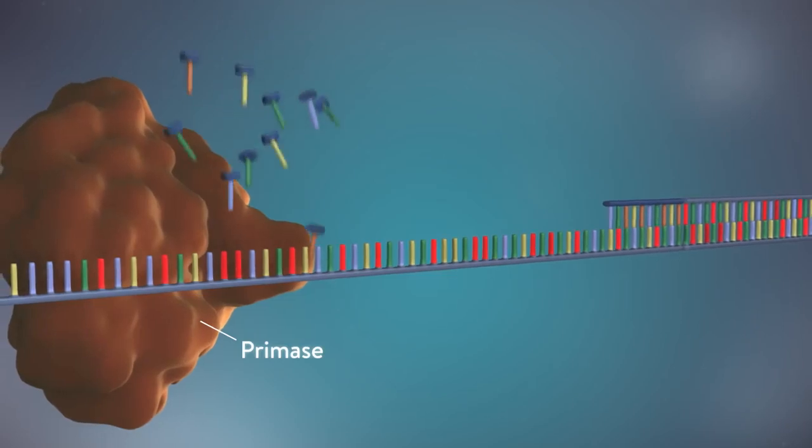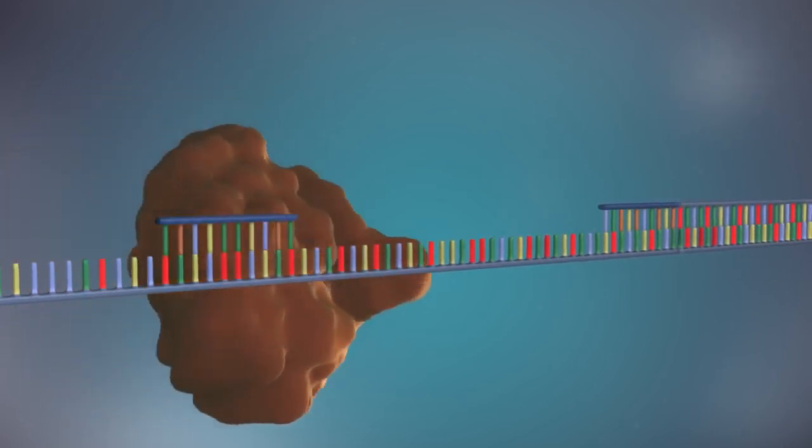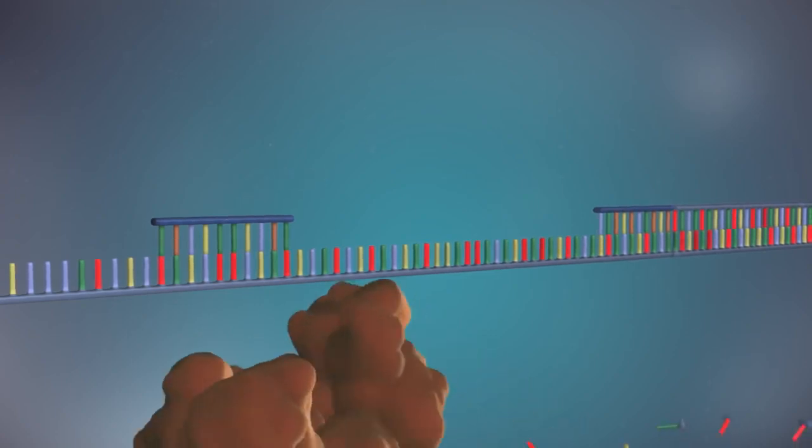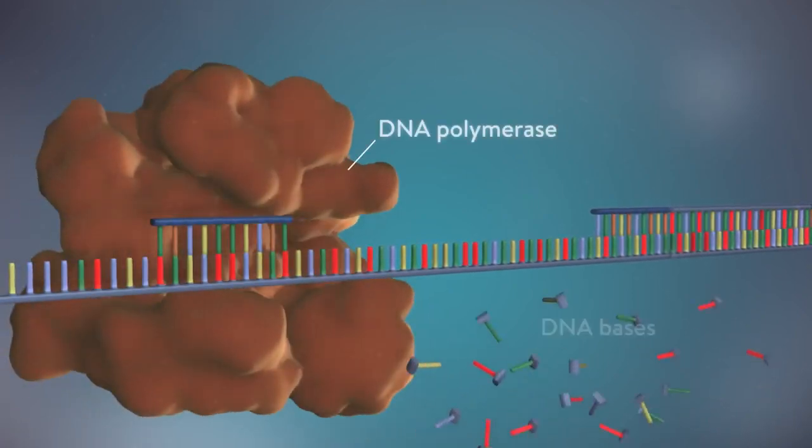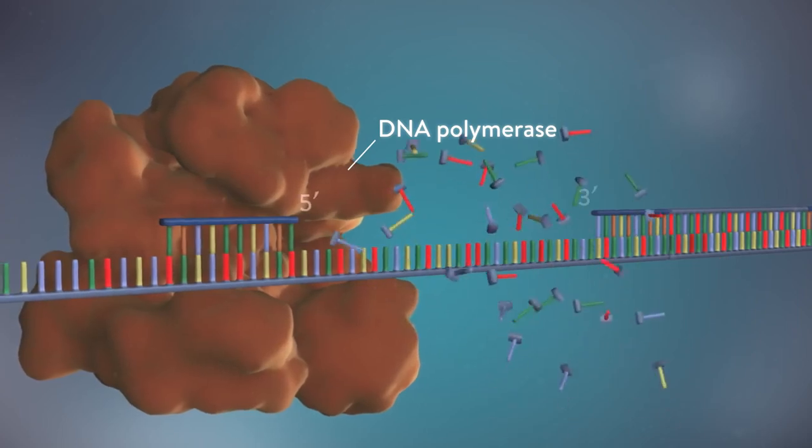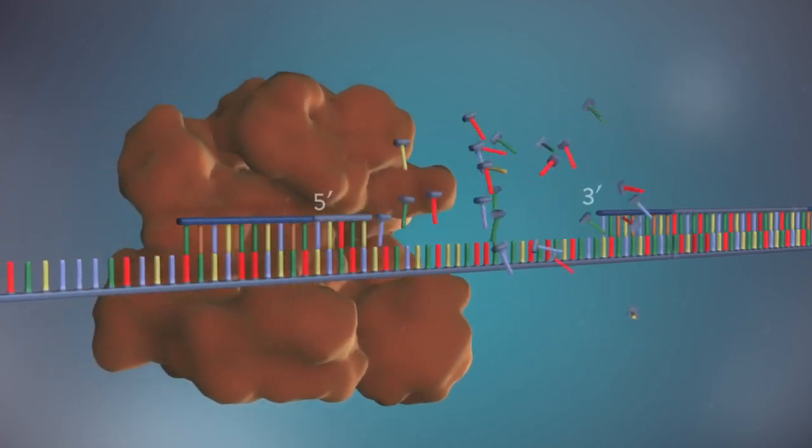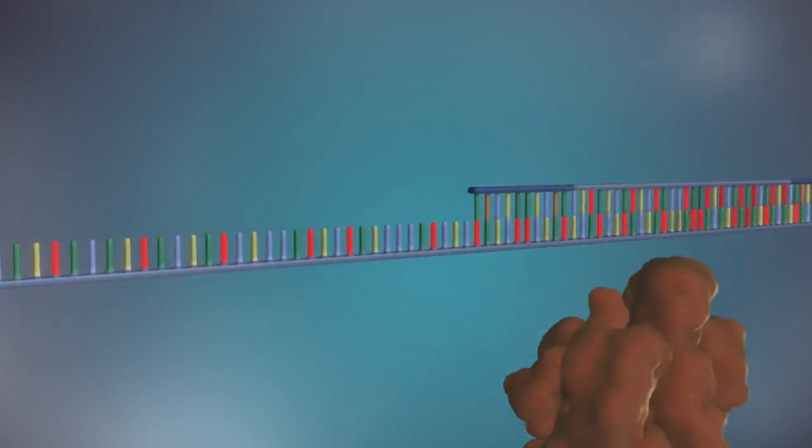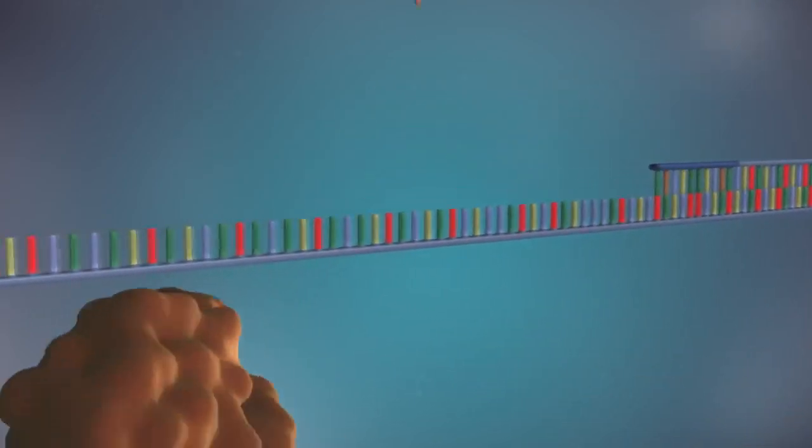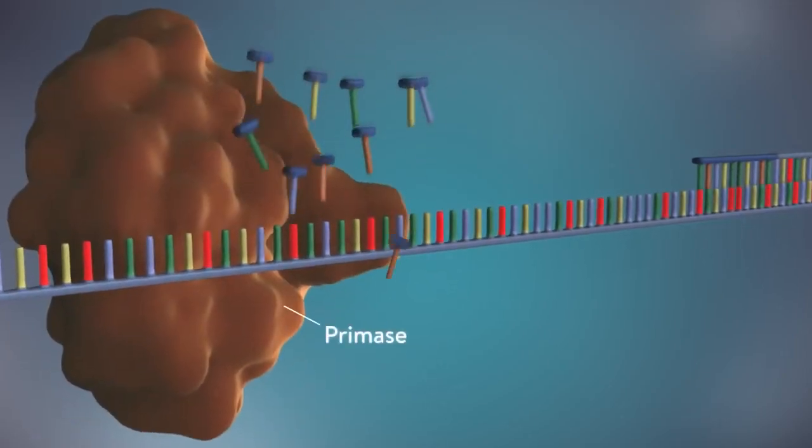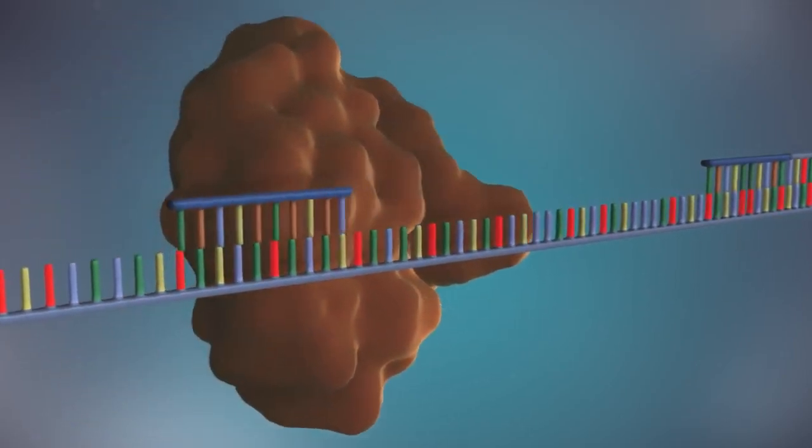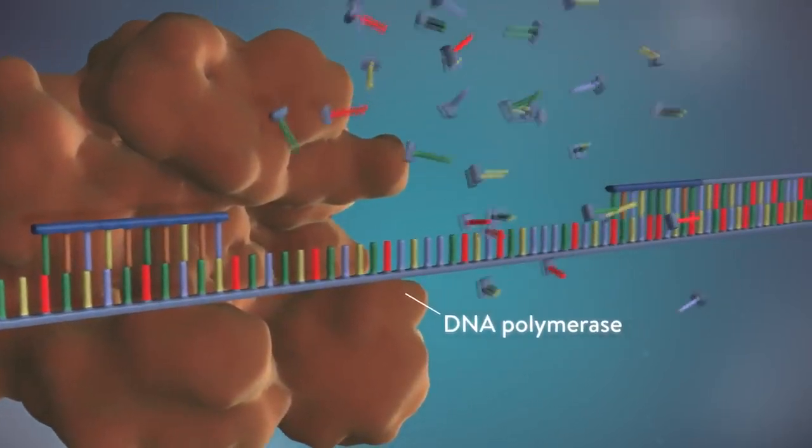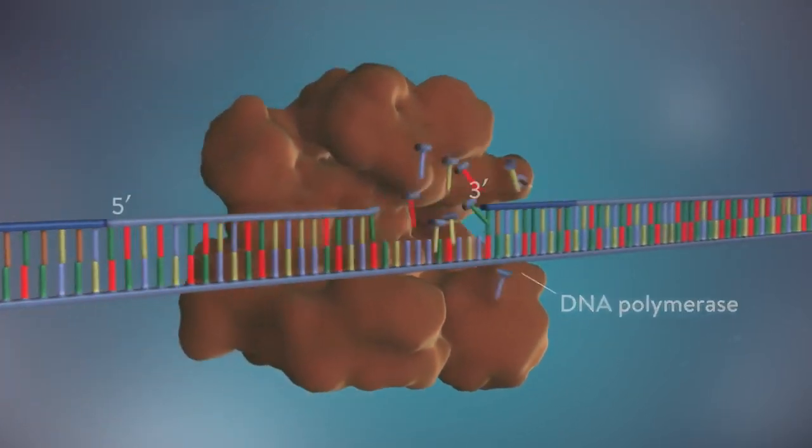Each fragment is started with an RNA primer. DNA polymerase then adds a short row of DNA bases in the 5' to 3' direction. The next primer is then added further down the lagging strand. Another Okazaki fragment is then made and the process is repeated again.